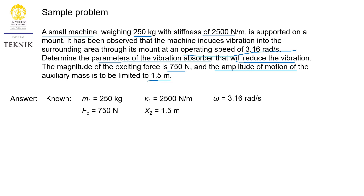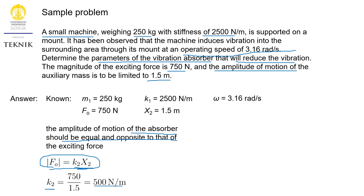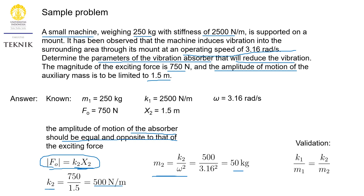Setting our known parameters, we use the concept that the amplitude of motion of absorber mass m2 should be equal and opposite to the exciting force: k2 times X2 equals minus F0. Taking absolute values, we first find k2 = 500 N/m. Having obtained k2, we use the natural frequency equation to find m2 = 50 kg. As a quick validation, k1 over m1 = 10 and k2 over m2 = 10 as well, so the ratio condition is satisfied.